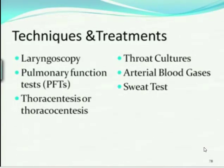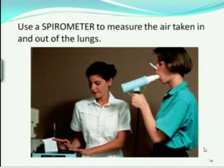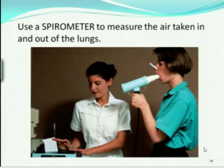Throat cultures — they're trying to find out what kind of microorganisms the person has. Arterial blood gases. Sweat tests — just be able to put that in the right category. Here is a spirometer — a device to measure the air taken in. It looks like a clothespin on the patient's nose, and she's directed to take a big breath and blow out as hard and as long as she can, while the technician records a graph.